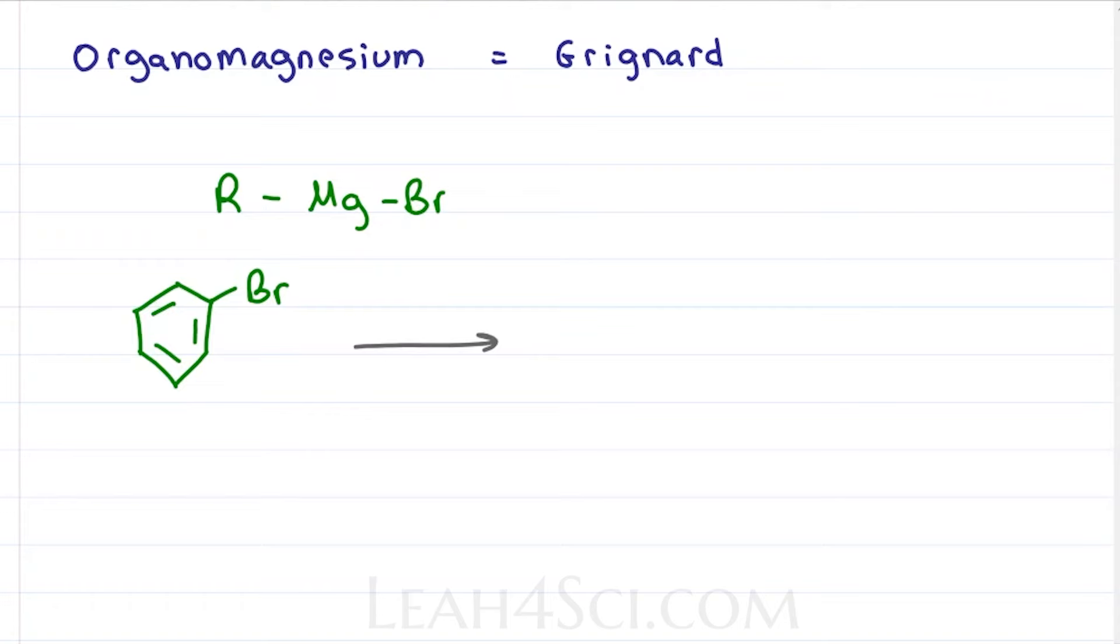The Grignard reagent is formed when you react a molecule that has a halogen on it, for example, an alkyl vinyl or aryl halide, in this case I have bromobenzene, with magnesium in an ether solvent such as diethyl ether or tetrahydrofuran, to give you a product wherein the magnesium inserts itself in between the carbon and the halogen. Fortunately, you're not responsible for the radical mechanism, you only need to understand the product.